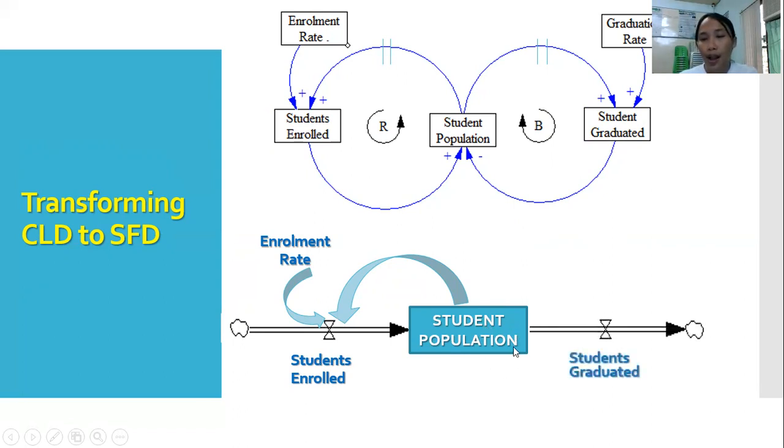And then, from this student population, there will be student graduation. This student graduation, students graduated, is influenced by our graduation rate. If graduation rate increases, students graduated will also increase, which leads to a decrease in our student population. So this is how a simple SFD is drawn for our CLD.